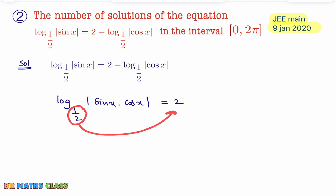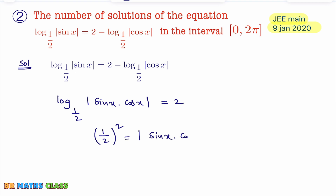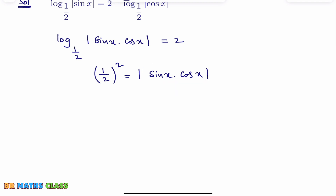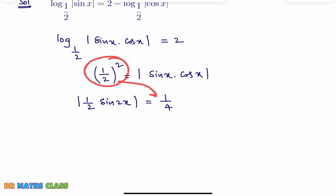This will become (1/2)² = |sin x · cos x|. To simplify further, I'll multiply numerator and denominator by 2. You observe that 2 sin x cos x = sin 2x, so this can be written as |1/2 · sin 2x| = 1/4, since (1/2)² = 1/4.